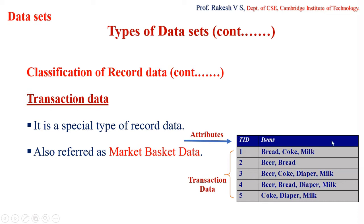In transaction data, the attributes are generally binary — represented as zero or one. Zero means a particular item is not purchased; one means it is purchased in that transaction. Transaction data might also contain attributes of discrete or continuous type — for example, the number of items purchased or the amount spent on a transaction.